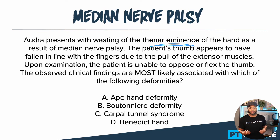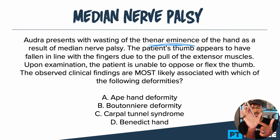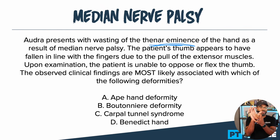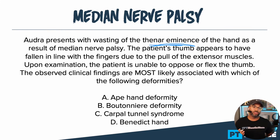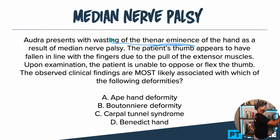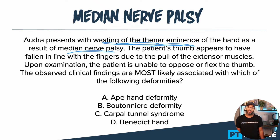I'm going to underline that because it's important — the thenar eminence is over here on the thumb side. It has all the thumb muscles in there. Then you have the hypothenar eminence, which is on the medial side of the hand, and that is where you have more of those digiti minimi muscles. You've got to know that for the MPTE. So it says wasting of the thenar eminence of the hand as a result of median nerve palsy.